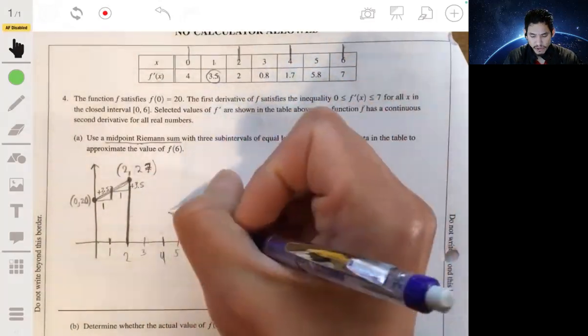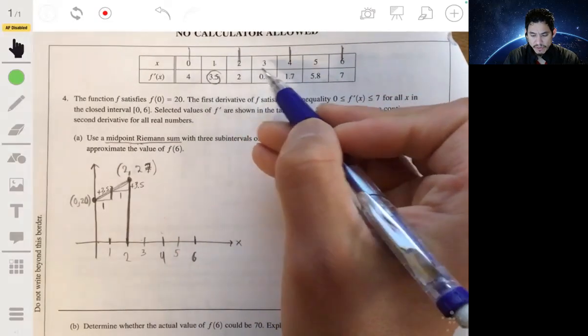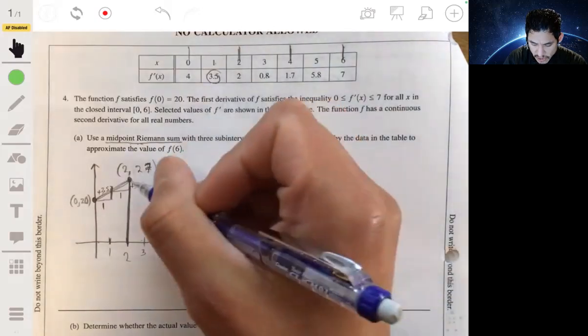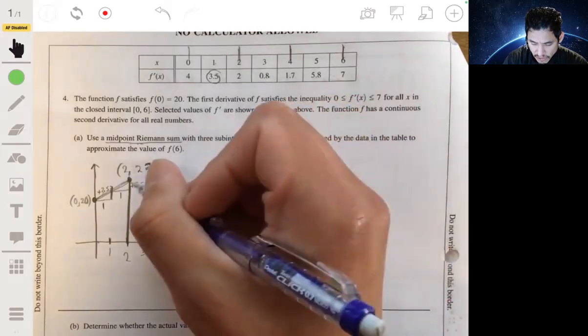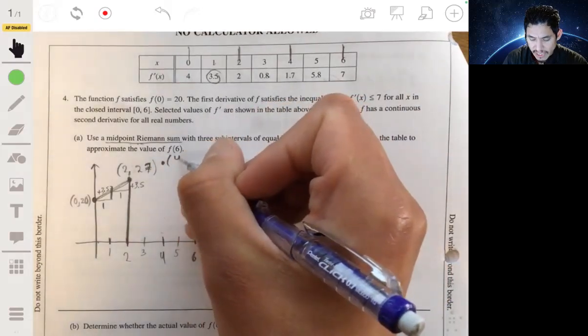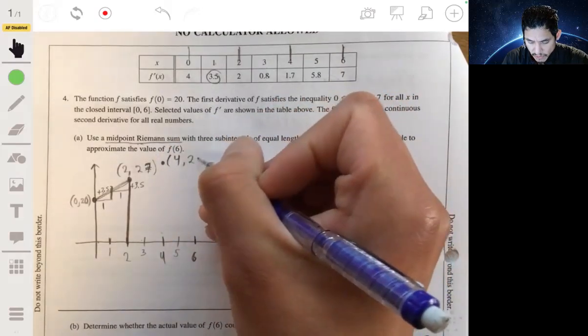So we're increasing by 3.5 twice on average. On the next interval from 2 to 4, we're increasing by 0.8 on average. We're going to increase by 0.8 twice. So at 4, going up by 0.8 twice will leave us at 1.6 more than this, or at 28.6.